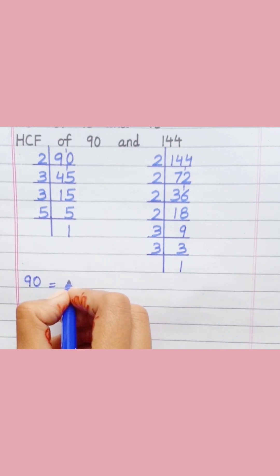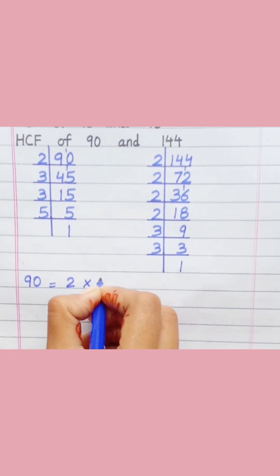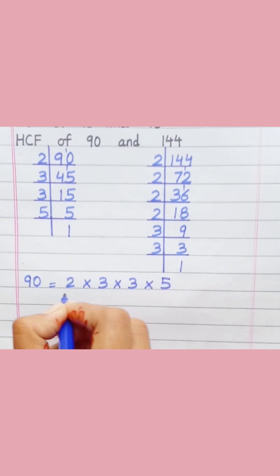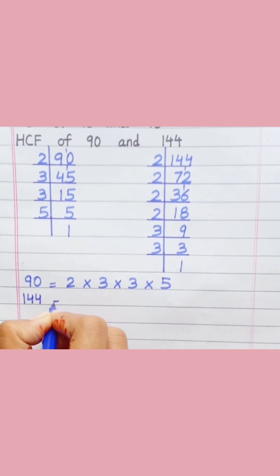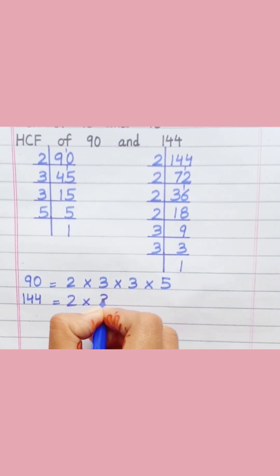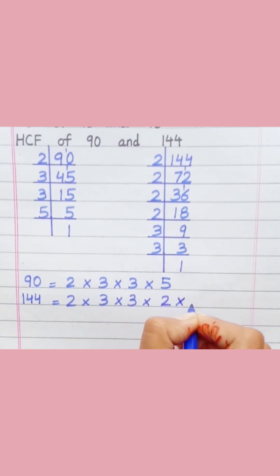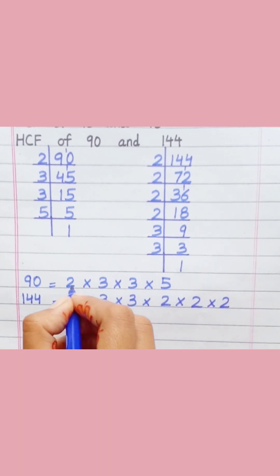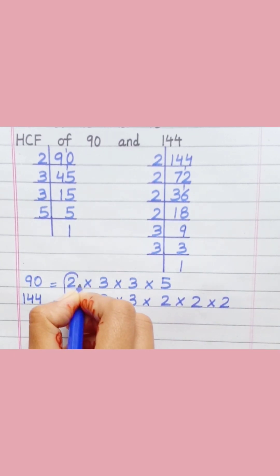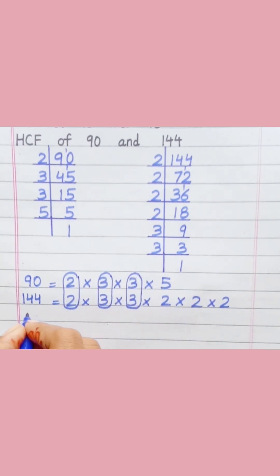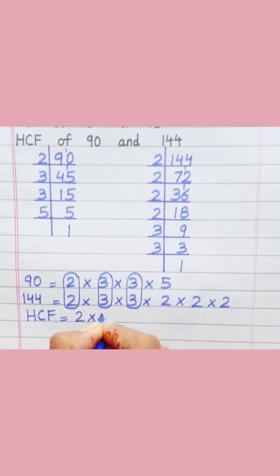90 equals 2 multiply 3 multiply 3 multiply 5. 144 equals 2 multiply 3 multiply 3 multiply 2 multiply 2 multiply 2. Loop the common prime factors among both. HCF equals 2 multiply 3 multiply 3 equals 18.